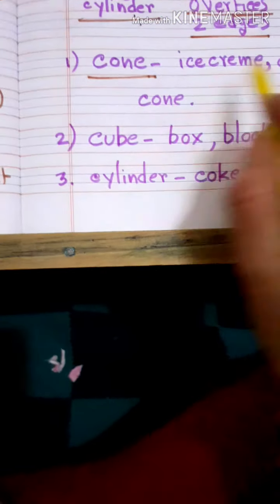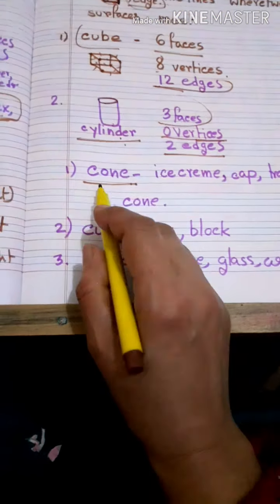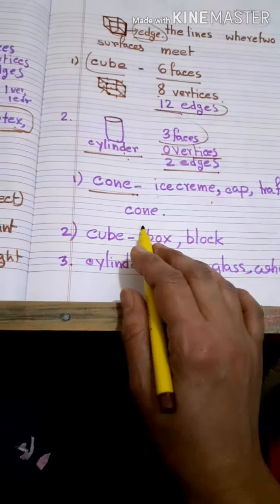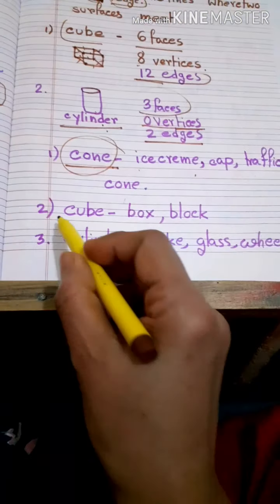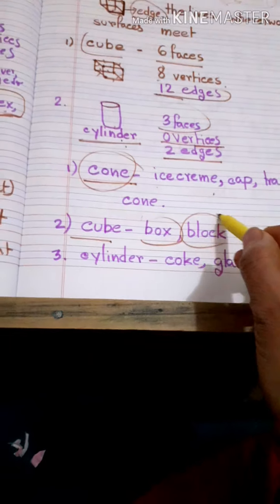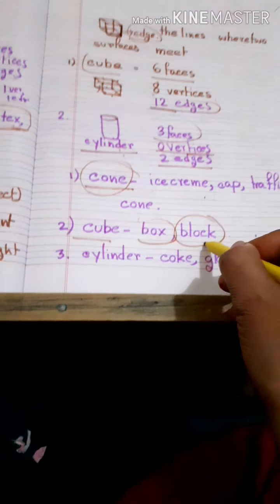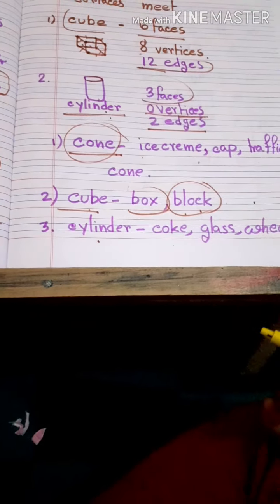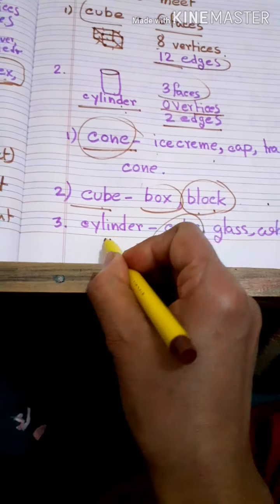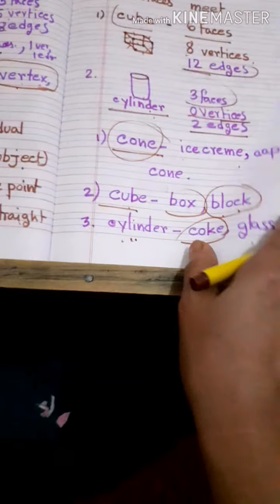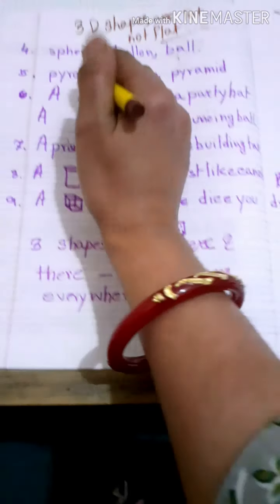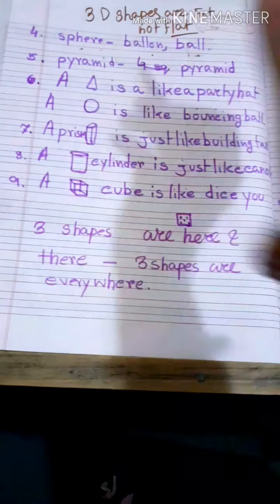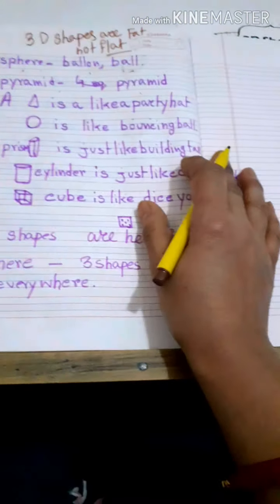Now, what 3D shapes can we see in real life? For a cone: ice cream, cap, trophy cone — all are the same like a cone shape. Cube: box, block — children play with blocks which are also the shape of a cube. Cylinder: when you take a Coca-Cola or any other cold drink, it comes in a can — that is shaped like a cylinder, as well as a glass and a car wheel. Sphere: balloon, ball — all are in a circle shape, that means sphere. And a pyramid itself is a pyramid shape.